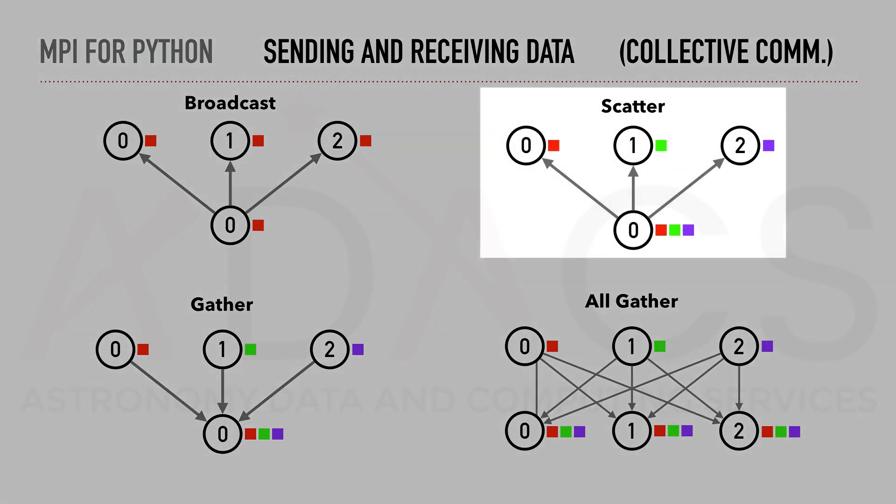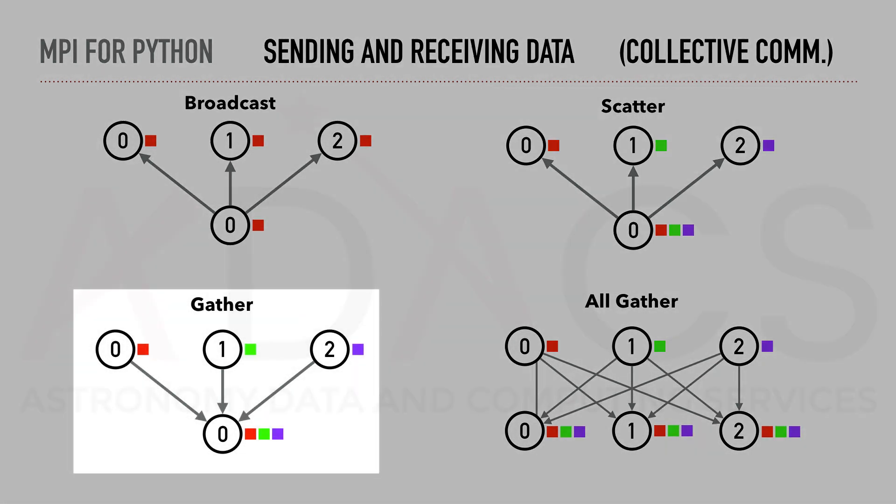A second pattern of interest is scatter. In this case, one process will split its message into several parts and send individual parts to different processes. A pattern related to scatter is gather.